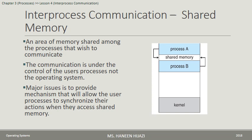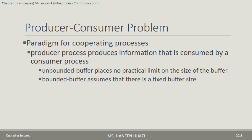One thing to consider is how to perform synchronization for processes that want to access the shared memory. The Producer-Consumer Problem is an example of cooperating processes: a producer process produces information that is consumed by a consumer process. This can be modeled using an unbounded buffer, where there is no practical limit on the buffer size, so the producer can always produce new items, while the consumer may have to wait if the buffer is empty.